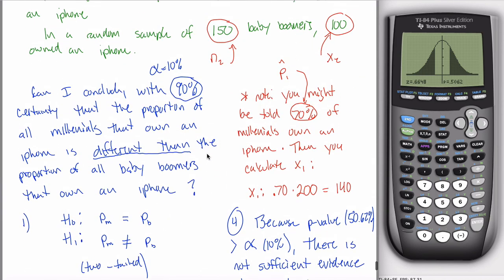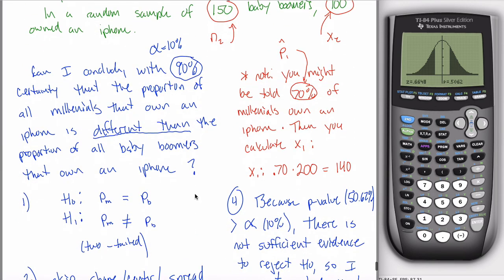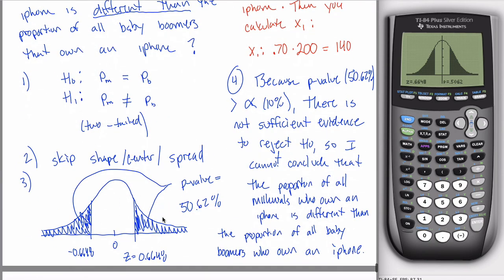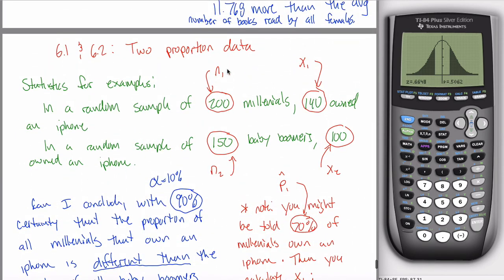So that's hypothesis testing when you have two different proportions. I think I'm just going to do the one example because really they all kind of look like this. What can change? It could say less than or greater than instead of different than. But that just makes it a one-tailed test, either left or right-tailed as opposed to two-tailed. You're still doing the same thing. Your null and alternative will look just like this, you just might change this sign. You'll skip shape, center, and spread. You'll figure out your P-value and compare it to alpha. If your P-value is greater than alpha, can't reject the null, can't say the claim is true. If your P-value is less than alpha, reject the null, say the claim is true. That's it. That's all you're doing with hypothesis testing when you have two different proportions.